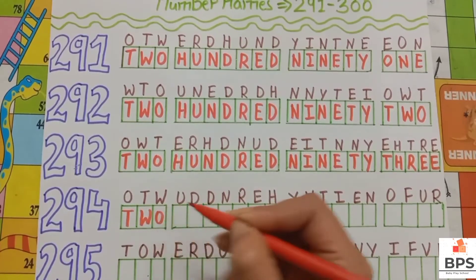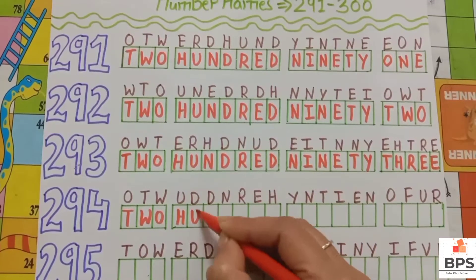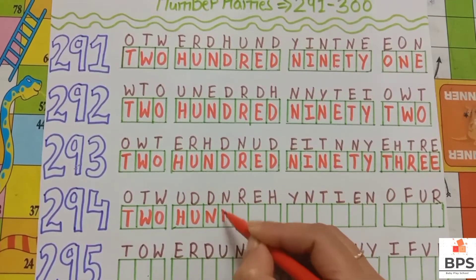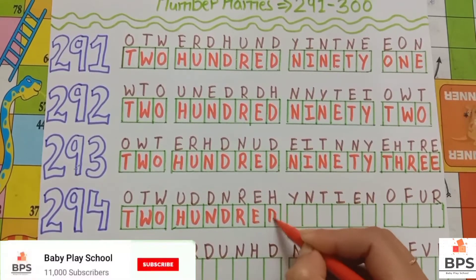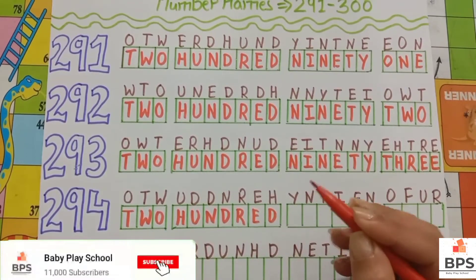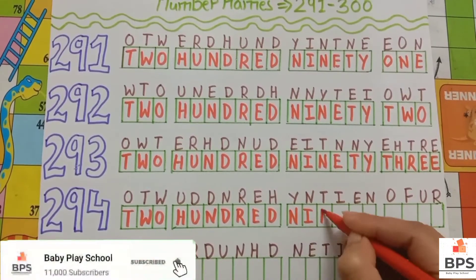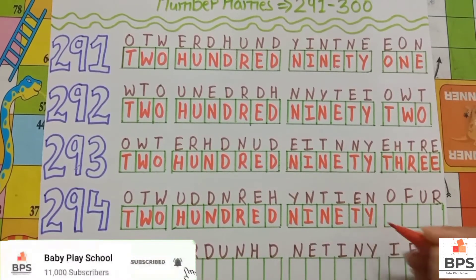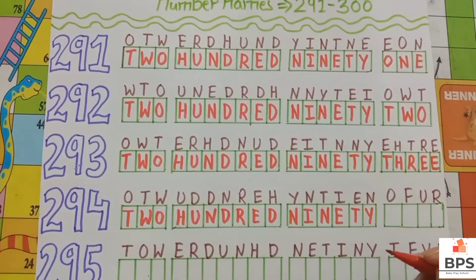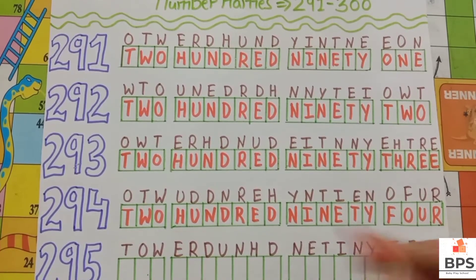Two hundred ninety four. T-W-O, two. H-U-N-D-R-E-D, hundred. N-I-N-E-T-Y, ninety. F-O-U-R, four.